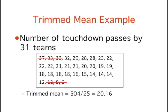Let's go back to the NFL football example. To compute the mean trimmed 20%, you remove the lower 10% of the scores (6, 9, and 12), as well as the upper 10% of the scores (33, 33, and 37), and compute the mean of the remaining 25 scores. This results in a trimmed mean of 20.16.